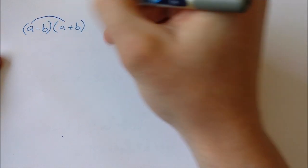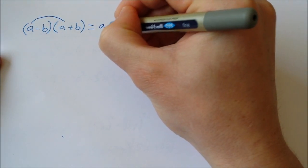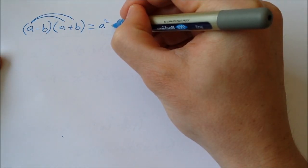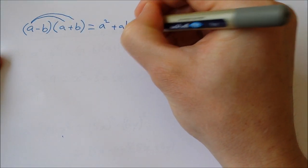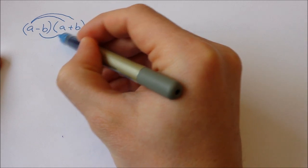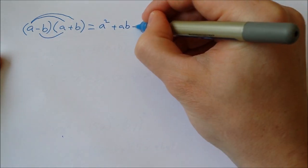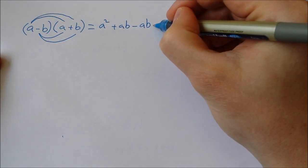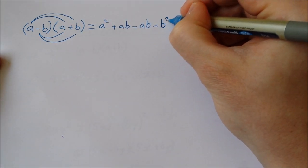that will give us a squared. We do the first by the second, that'll give us plus ab. We do the second by the first, that gives us minus ab. And we do the second by the second, and that gives us minus b squared.